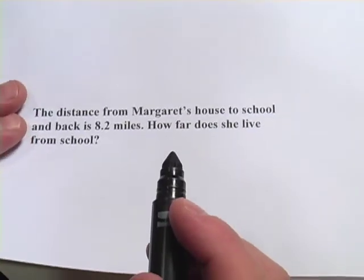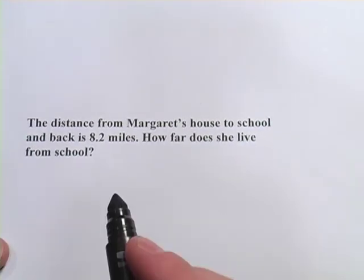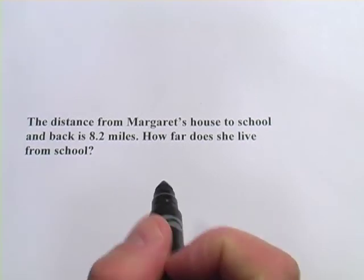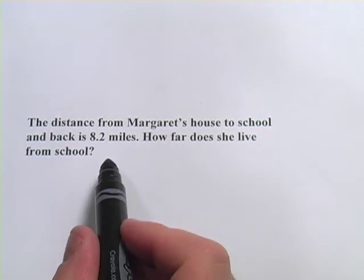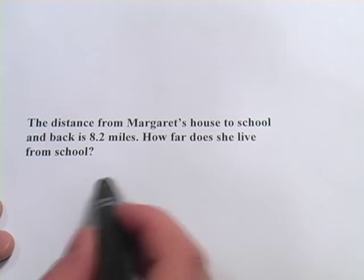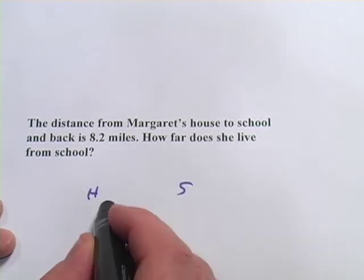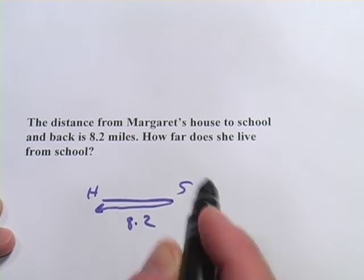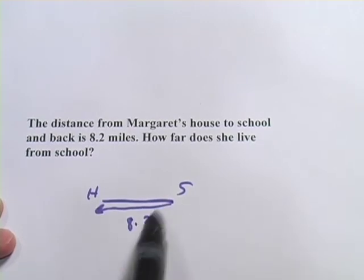Let's try one more. This one is a word problem. It says the distance from Margaret's house to school and back is 8.2 miles. How far does she live from school? So here's her house, here's the school, going there and back equals 8.2. So the distance she lives from school is going to be half of that round trip.